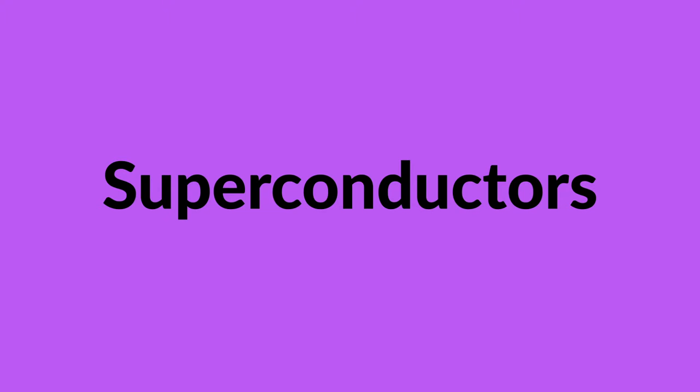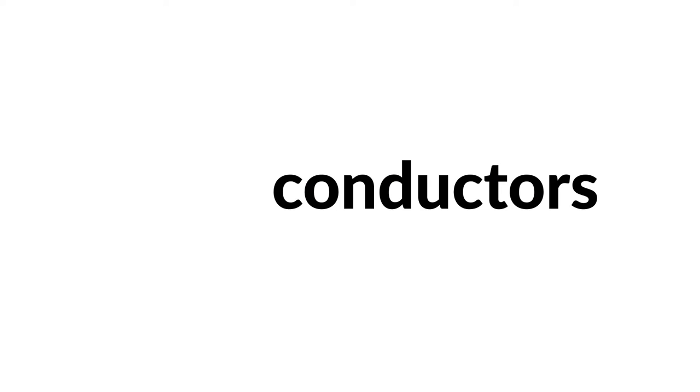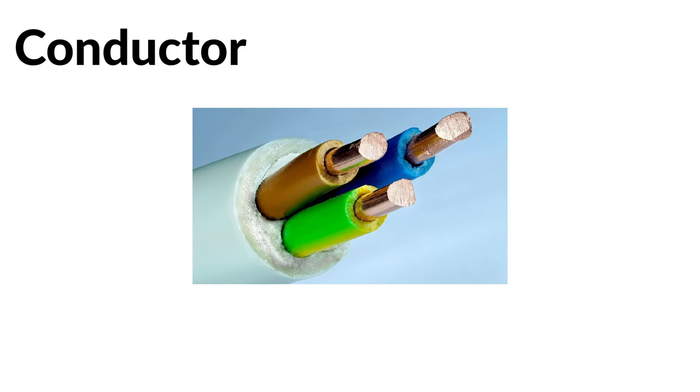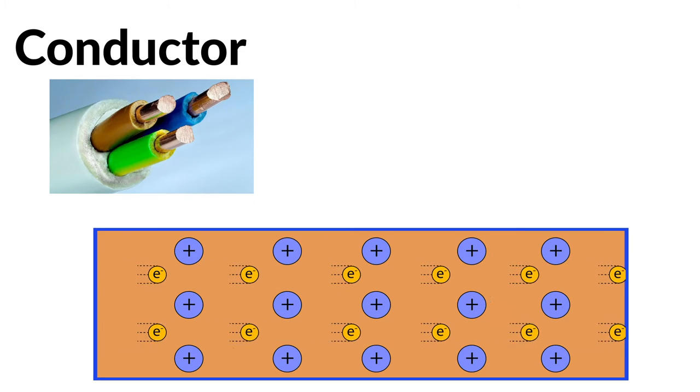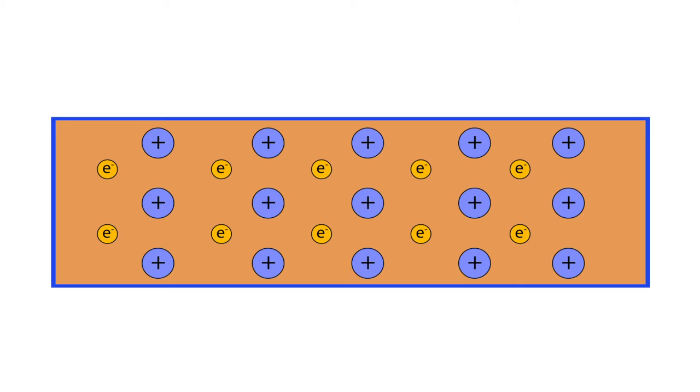Before we get into superconductors, we must first understand conductors. A conductor is an object, usually metallic, that allows the flow of charge in one or more directions. In the microscopic scale, this is because most metals are made up of a sea of electrons within which lie the individual metal cations.